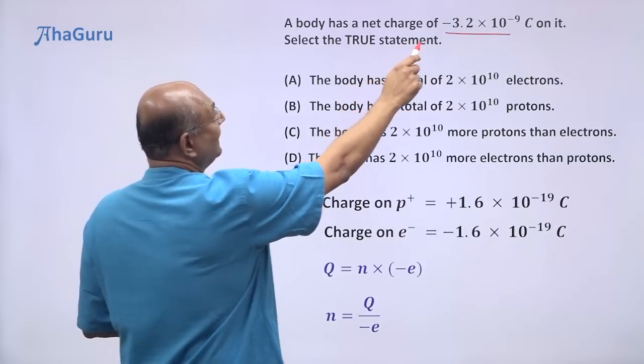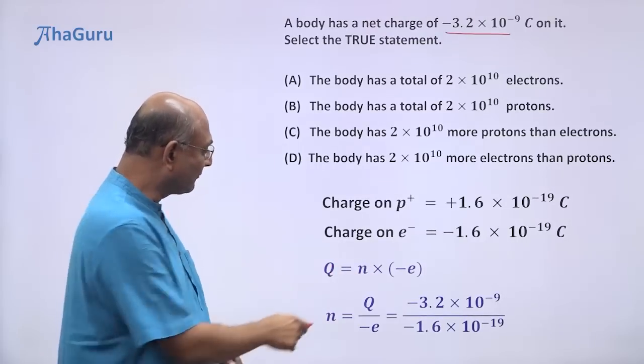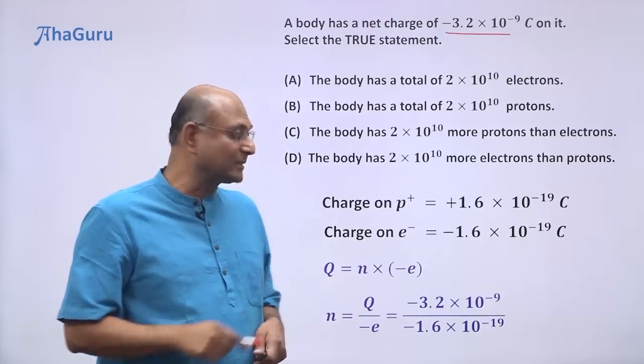What is Q? Q is -3.2 × 10^-9. And of course, -e is -1.6 × 10^-19.